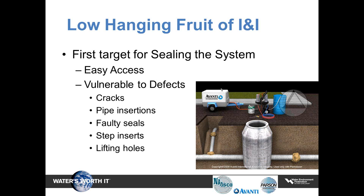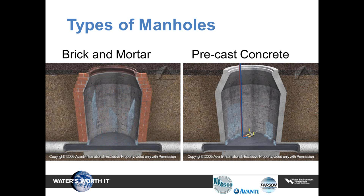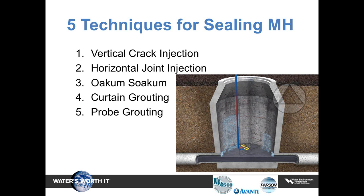Let's review a number of techniques for sealing leaking manholes: vertical crack injection, horizontal joint injection, oakum-caulking, curtain grouting, and probe grouting. The following animations will help us understand what can be done to stop leaks in a manhole permanently. In the vertical crack injection animation, you see the leaking manhole with water coming in, and injection holes being drilled from typically the lowest point. You drill at a 45-degree angle toward the crack, a distance off the crack equal to about half the wall thickness, typically on either side of the crack.